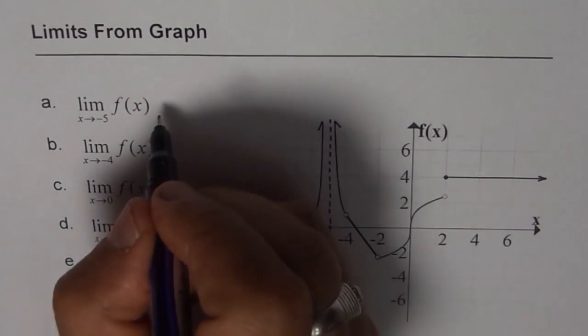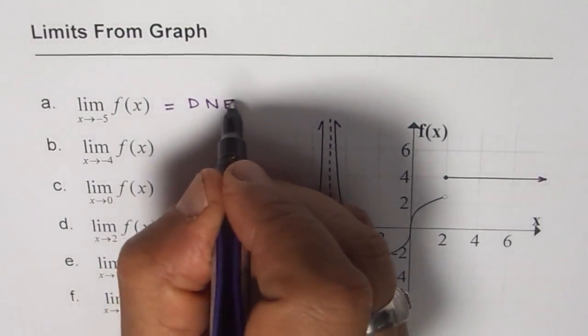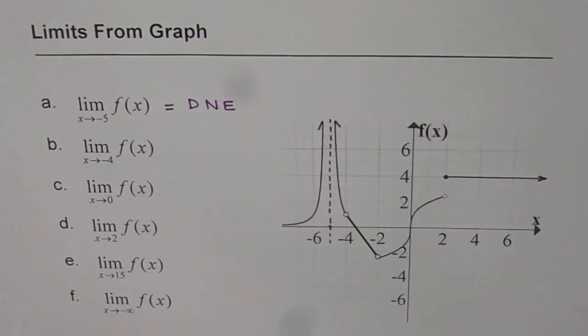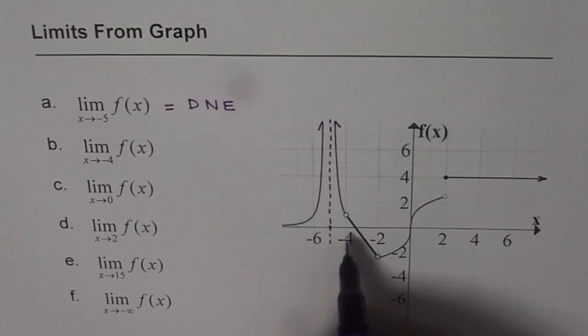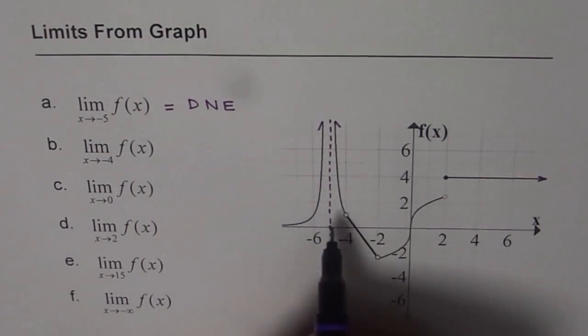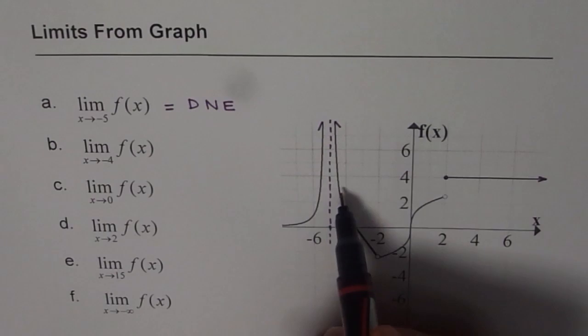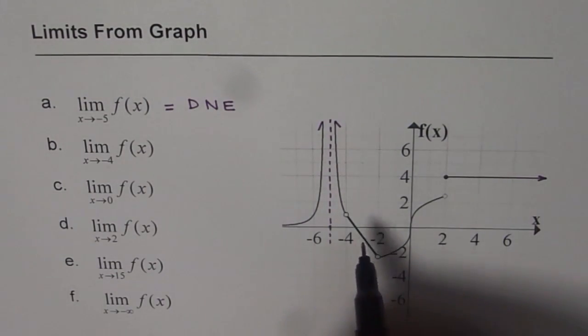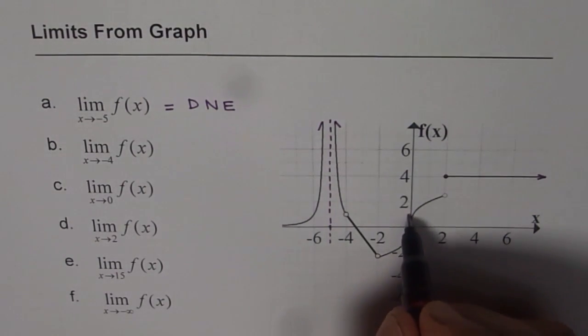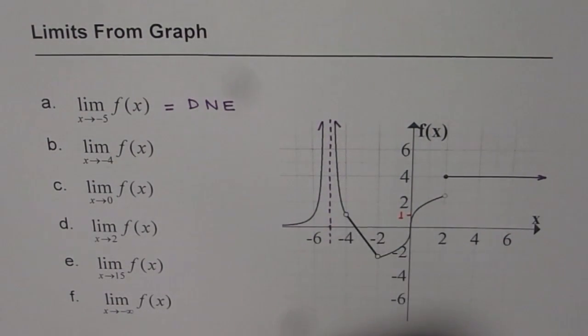And therefore we say that this limit does not exist. Minus 4. Limit of the function as x approaches minus 4. So if you move from left side, you're on this side of the graph, you're approaching the value which is 1. Even from the right side, you're approaching 1.